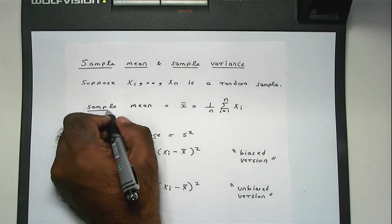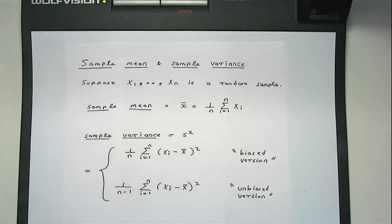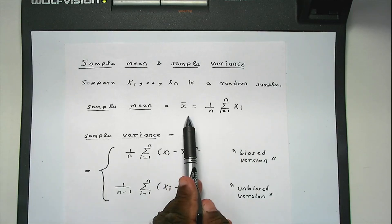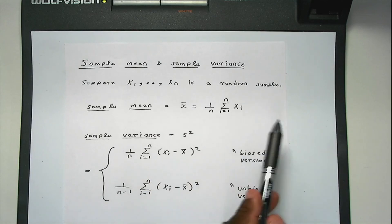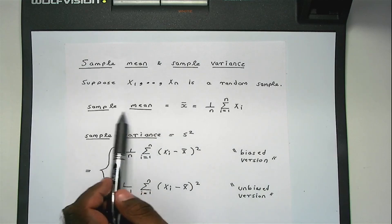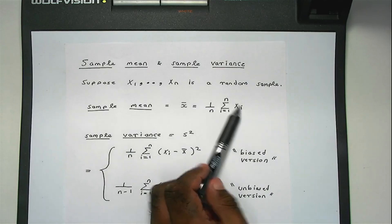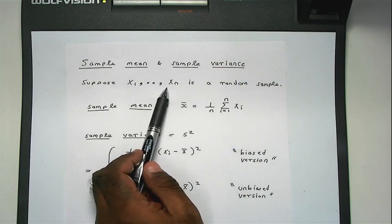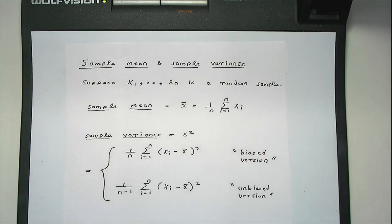The next thing I'm going to talk about is finding the population mean of the sample mean and the population variance of the sample mean. You shouldn't confuse the sample mean with the population mean, because the sample mean computes the average of the xi's — the xi's constitute a sample — whereas the population is something you cannot access.